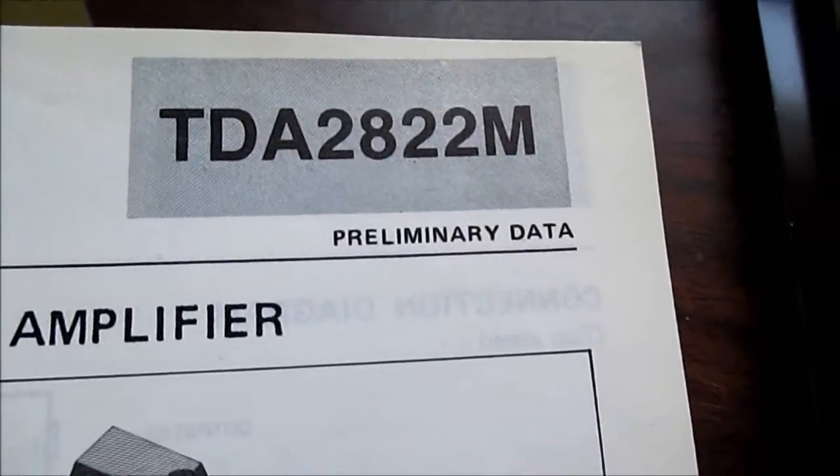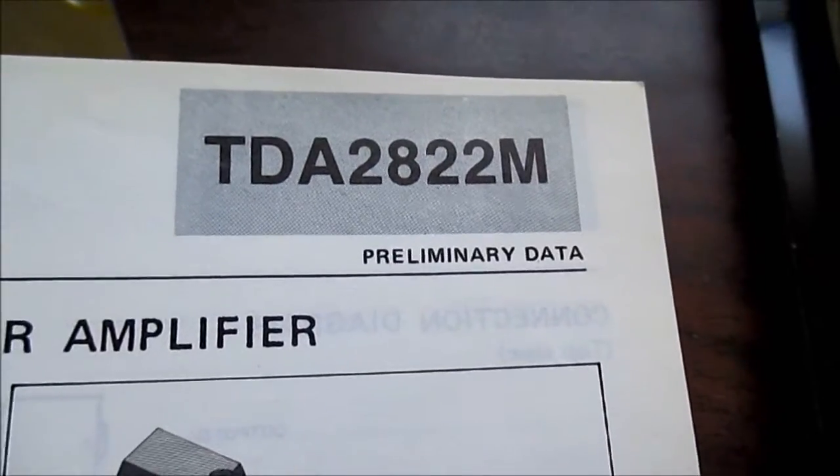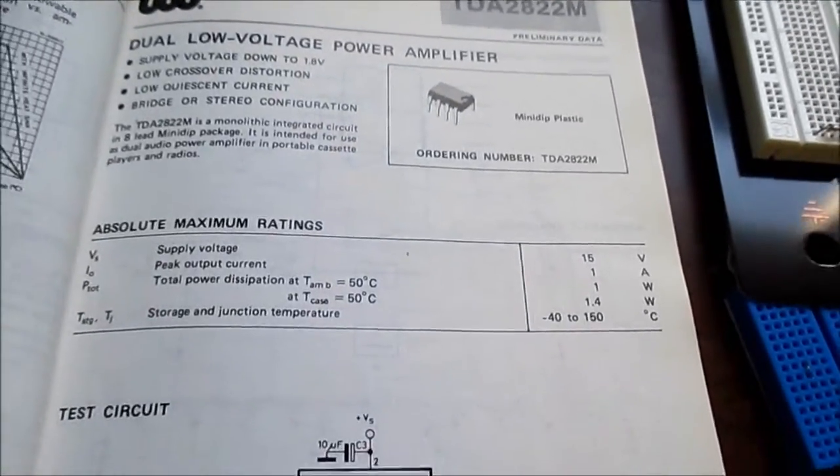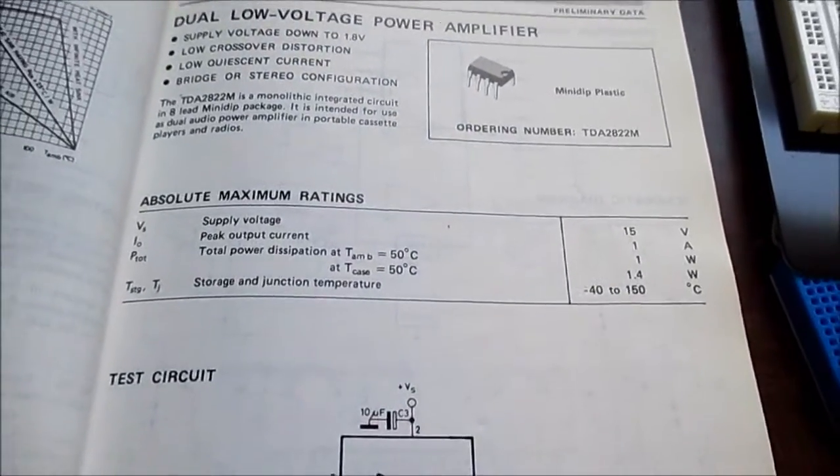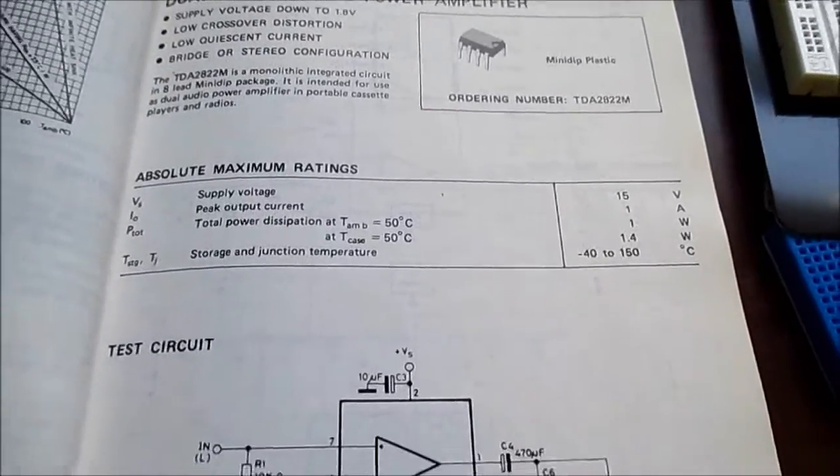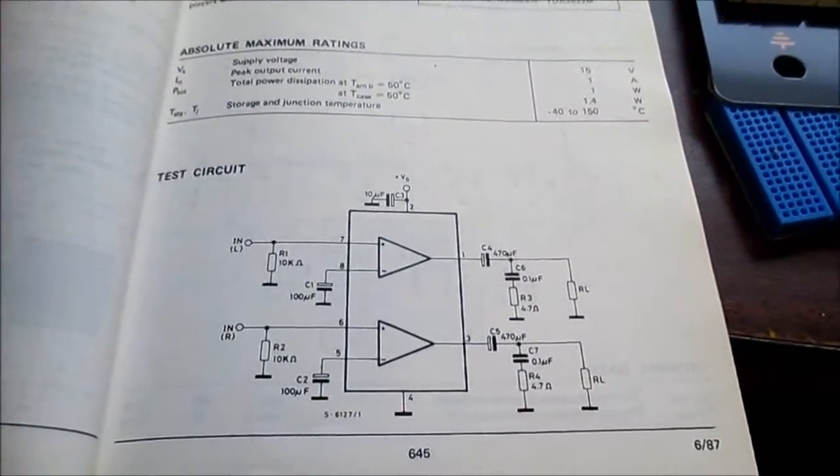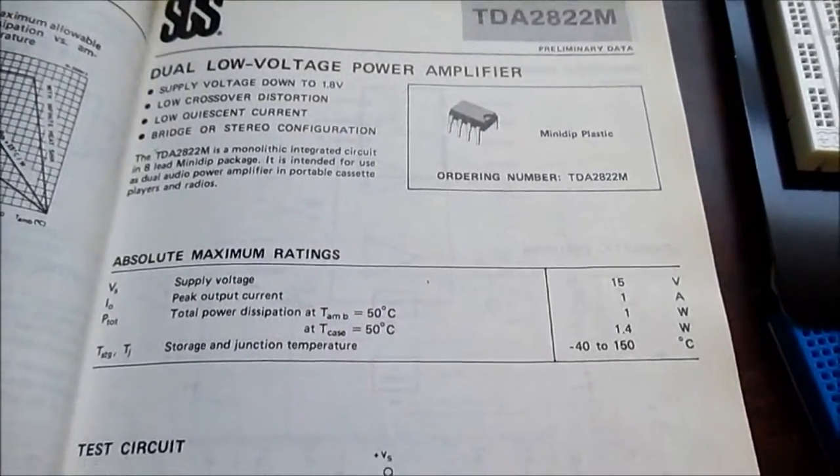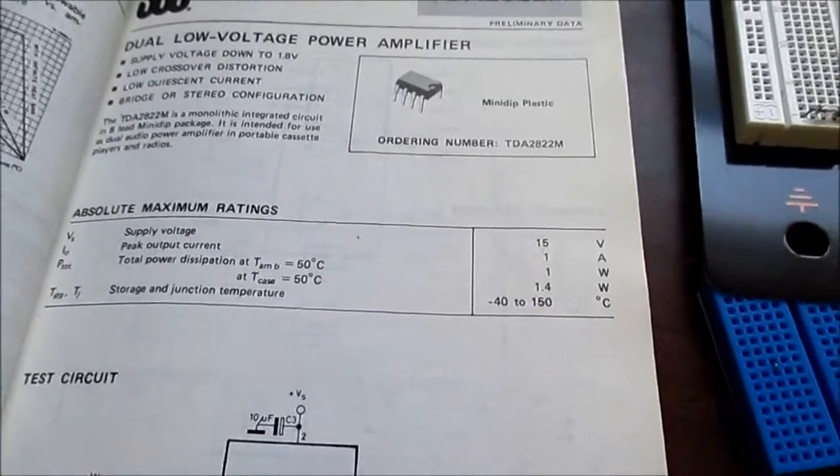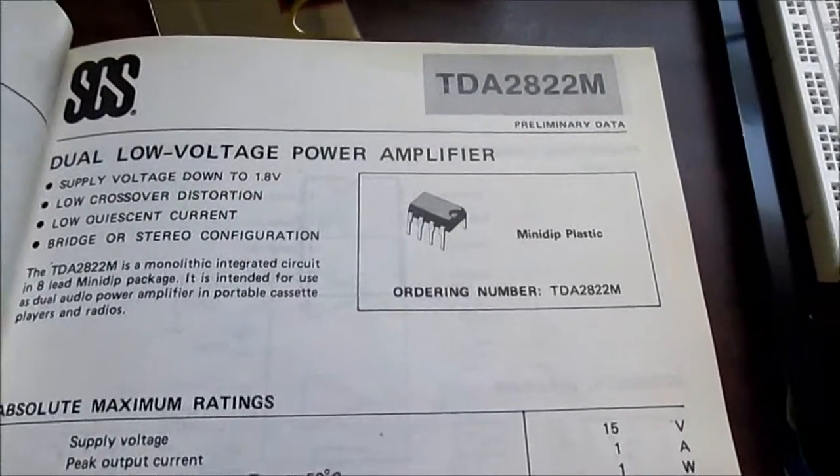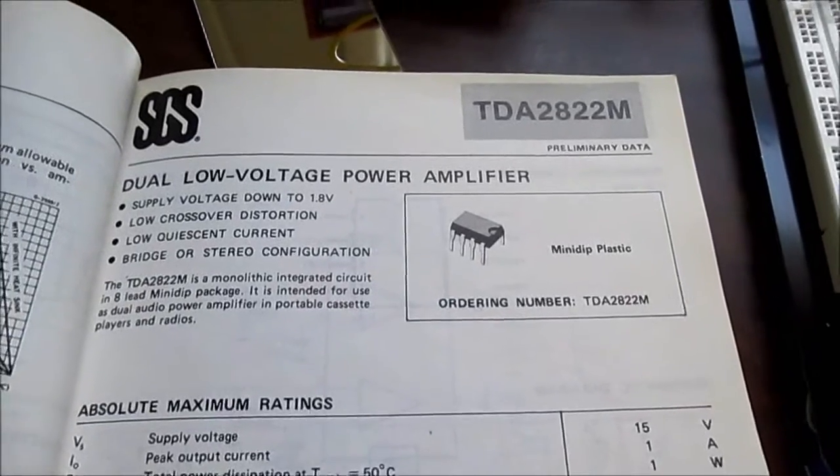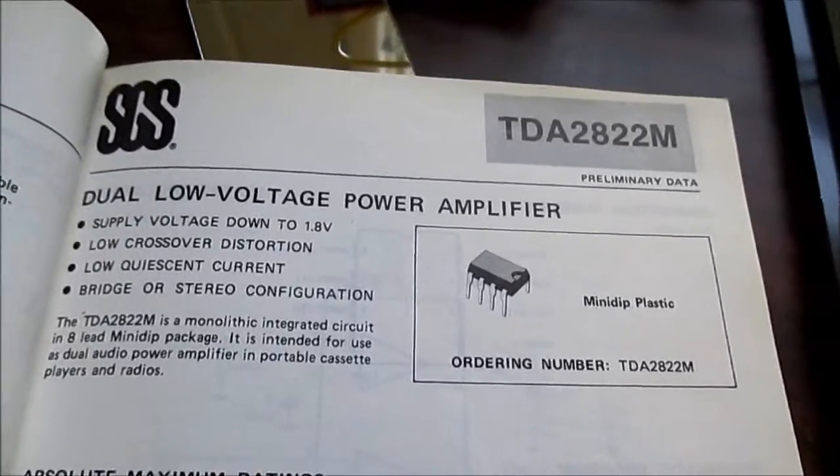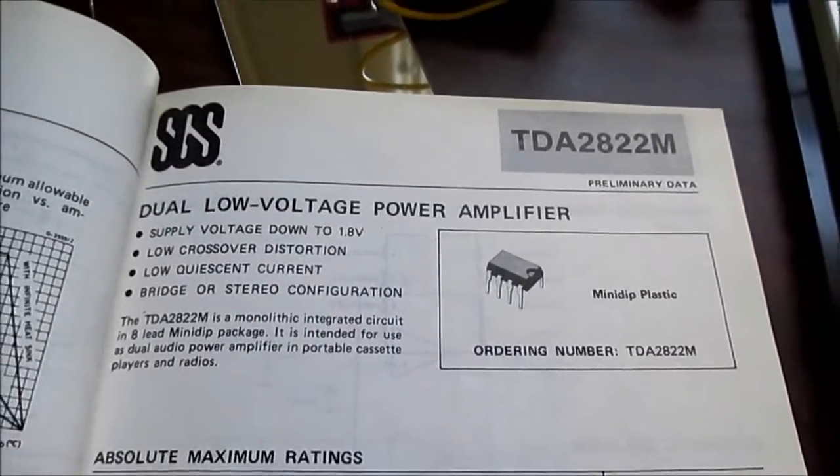You notice this says preliminary data. So it wasn't out yet. They were just announcing that it will be out. And when it did come out, it was used in small boom boxes. I had a small boom box that actually used this IC in it. And I saw it used in computer speakers as well. It was quite common. Pretty popular chip. And I'm pretty sure it's obsolete now. I don't think it's a current product.